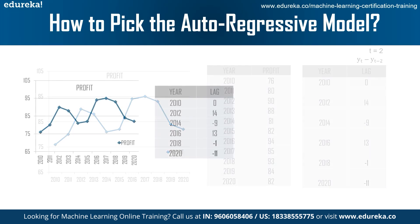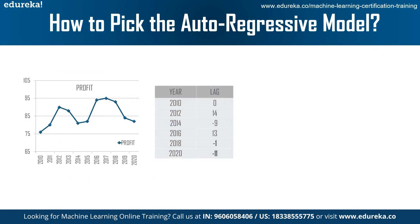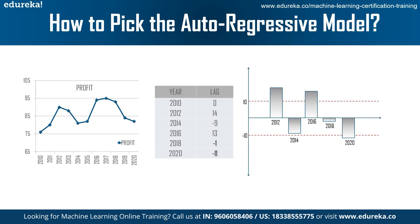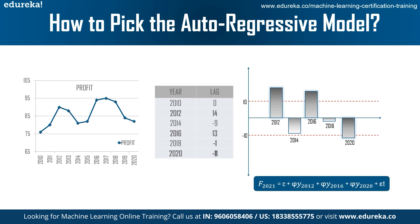For this data, we make a PACF plot with a threshold magnitude of 10. From the plot, the profit lag for years 2014 and 2018 is below the magnitude of 10, so we only take the points for t = 2012, 2016, and 2020. The forecasting equation becomes: forecasted value for 2021 = C + phi × Y(2012) + phi × Y(2016) + phi × Y(2020) + error term eta. This is the simplest auto regression equation, taking only the statistically significant lags.